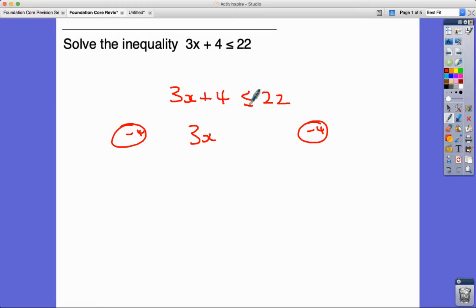So 3x on this side, take 4 away, is less than or equal to 22 subtract 4 which is 18. Now I want the x to be on its own, so I need to get this 3 to the other side. At the moment it's x multiplied by 3, so the inverse operation is to divide by 3, and so what we get is x by itself, 1x, less than or equal to 18 divided by 3 which is 6.